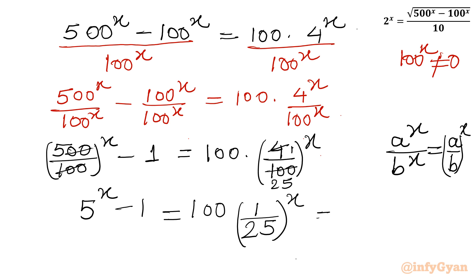Which I can further write as 100 / 25^x. Now I will cross multiply once again. Since the denominator is an exponential function it cannot be zero, so I can write 25^x × (5^x - 1) = 100.